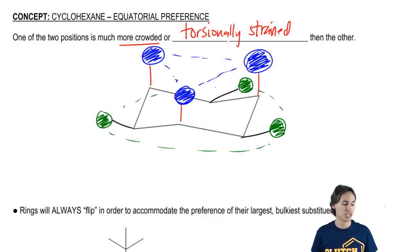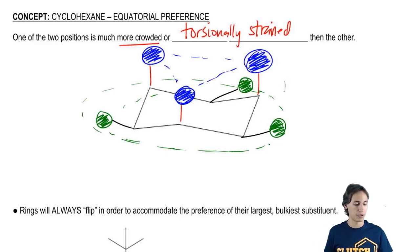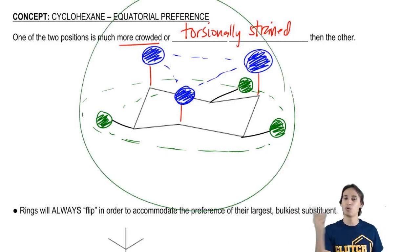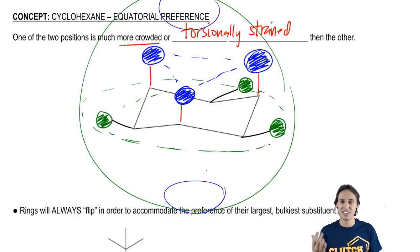In fact, if you want to think about the equatorial position, it kind of looks like it's the equator of the Earth. If this was like a big globe, the equatorial positions would be on the equator. The axial positions would be like on the North Pole and the South Pole. So you want to be in paradise, like on an island. The axial positions suck. That's what I'm trying to say. Especially when you put large groups there, you do not want to be in the axial position.